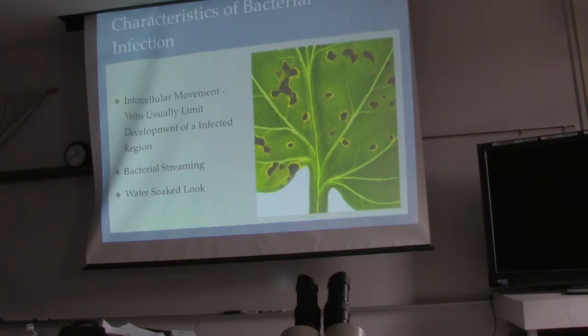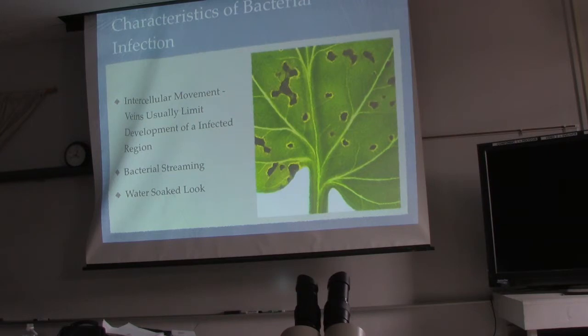Summary: fungus — over the veins, circular. Bacteria — not crossing veins, water-soaked, black spots.